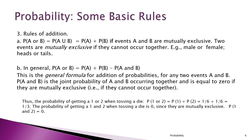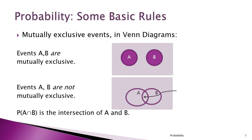This Venn diagram is a simple way of seeing how A and B look when they're mutually exclusive — the top box shows A and B not touching. In the bottom box, A and B overlap because they're not mutually exclusive. That intersection is the probability of A and B, and the Venn diagram makes it very clear.